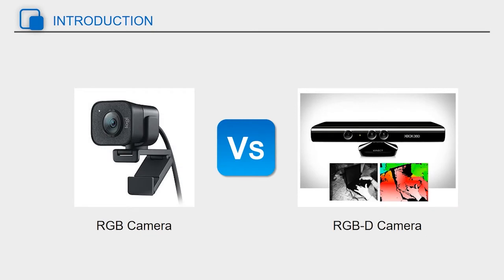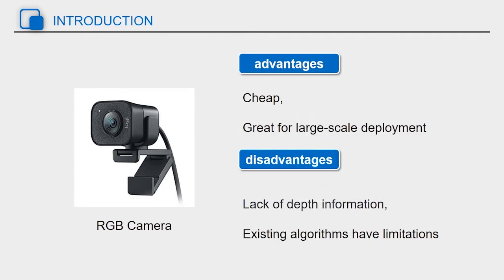RGB camera and RGBD camera are two mainstream devices of robot vision. RGB cameras are cheap and plentiful for large-scale deployment, but they lose depth information about objects, making it difficult to locate objects.